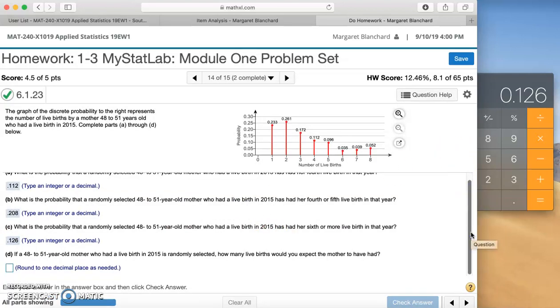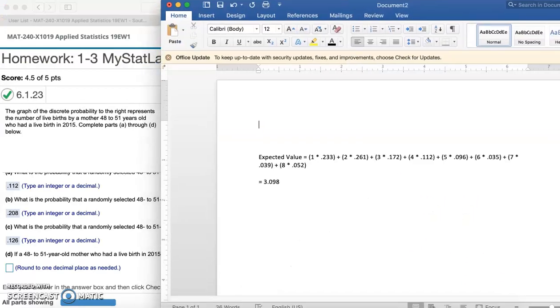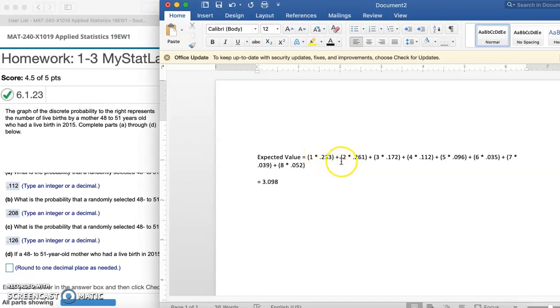The last part, if a 48 to 51 year old mother who had a live birth in 2015 is randomly selected, how many live births would you expect the mother to have had? That's the expected value. The expected value is equal to the possible value multiplied by its probability, and then you add them all up together. The expected value equals one times 0.233 plus two times 0.261, all the way up to eight times 0.052. When we add those all together, we get 3.098.